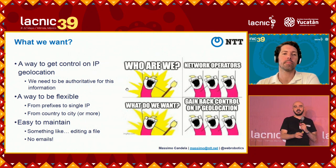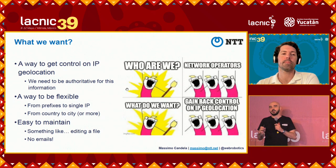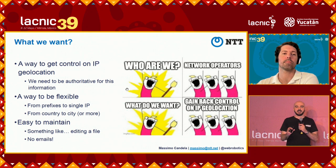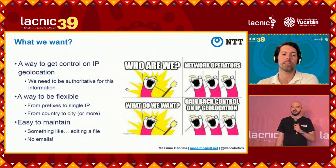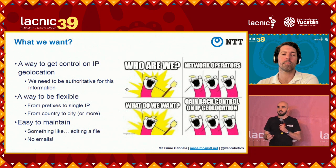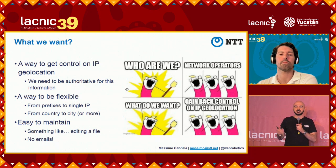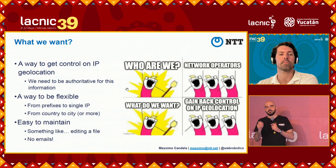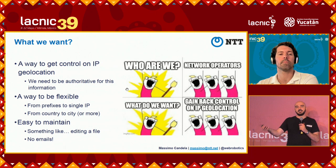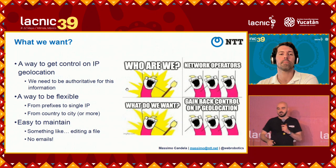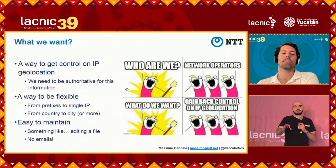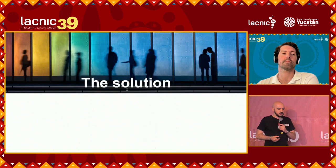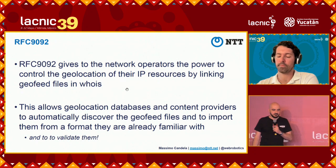We want to specify from country level up to city level — flexible and easy to maintain, like editing a single text file. Also, in many organizations the person who has access to the RIR portal is not the network engineer. In medium to large organizations, 99.9% of people — including most network engineers — do not have access to the portal. We need a way to externalize this in a file that network engineers can work on directly.